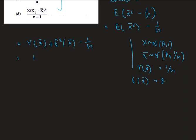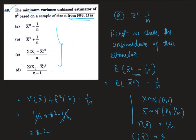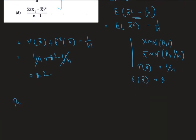Therefore, we get 1/n plus theta squared minus 1/n, which results in theta squared. Therefore, this estimator is an unbiased estimator for theta squared, so x-bar squared minus 1/n is an unbiased estimator of theta squared.